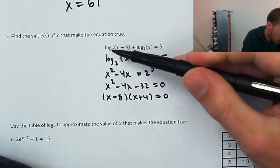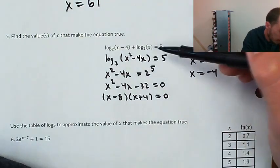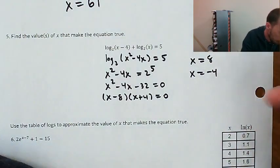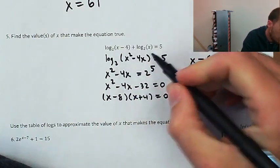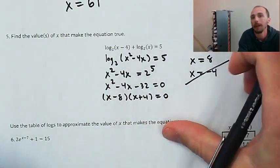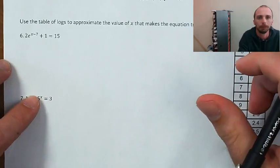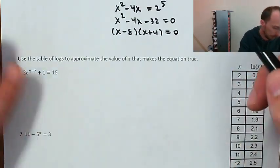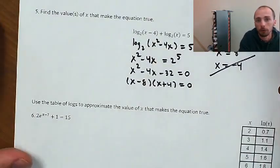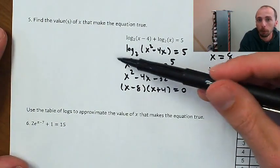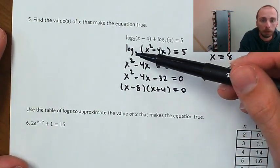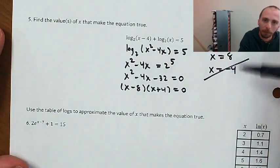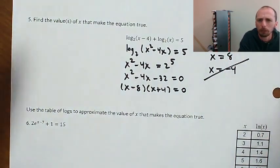I need to check my solutions for extraneous answers. Plugging in x equals 8: log base 2 of 4 plus log base 2 of 8 — that sounds reasonable. But if I plug in negative 4, I'm going to have the log of a negative number, which makes it an extraneous solution. Log of a negative number is not defined — with base 2, there's no power we can raise 2 to in order to get a negative number.